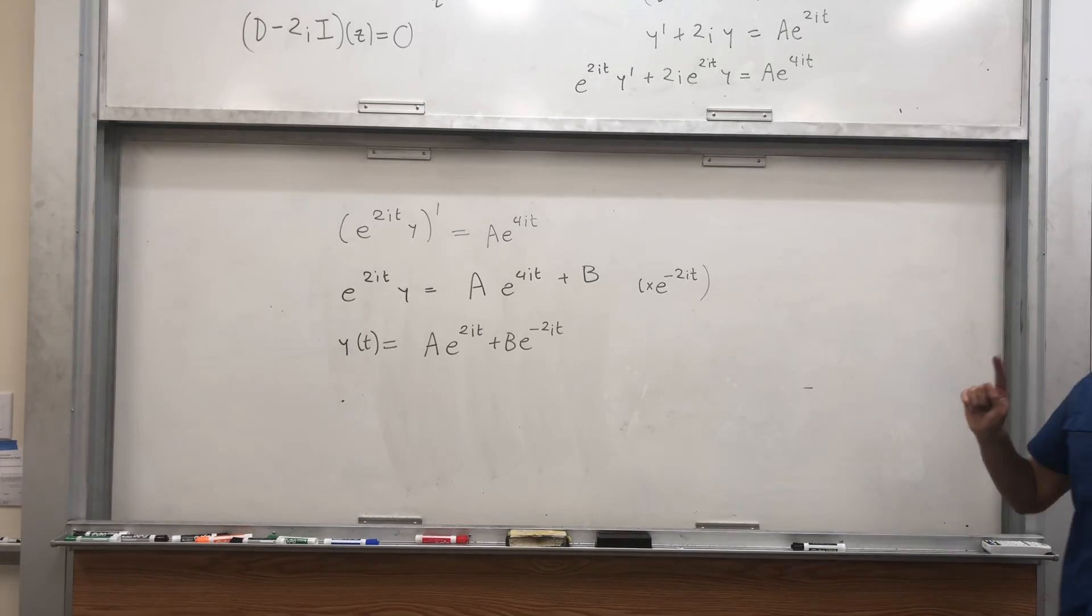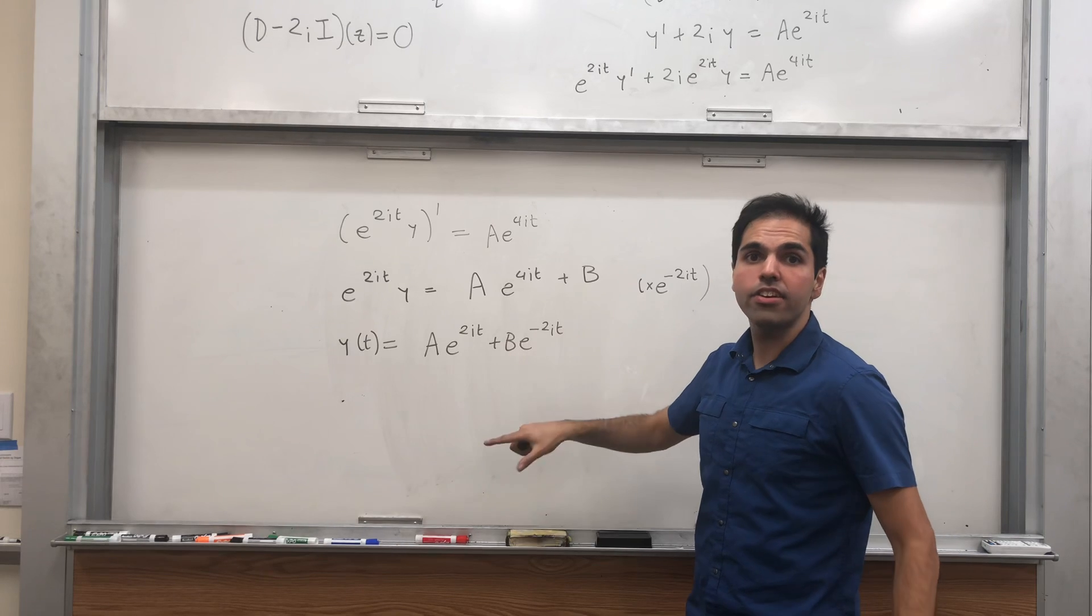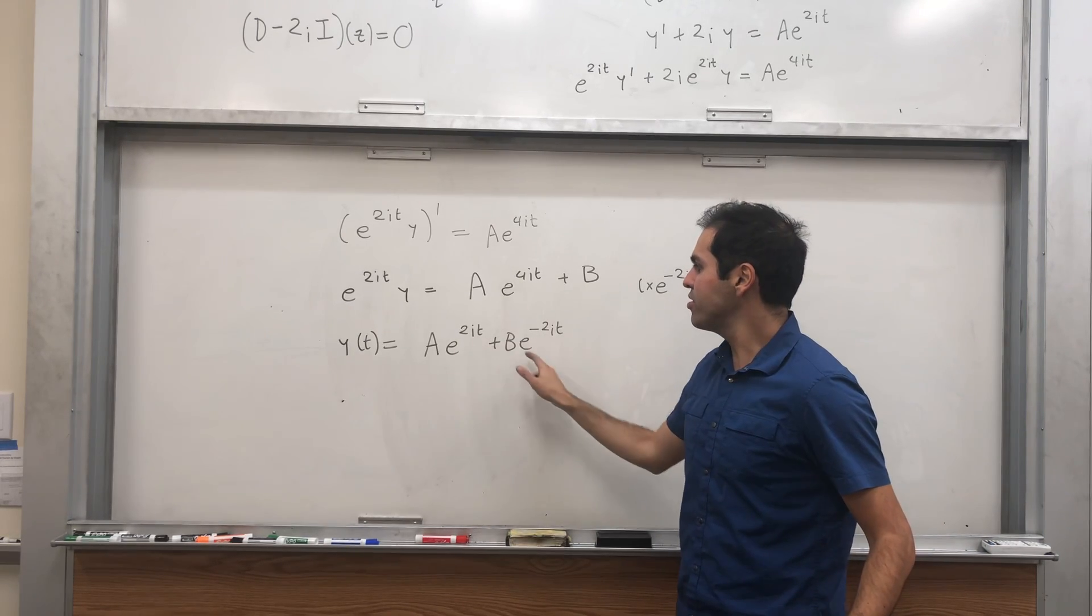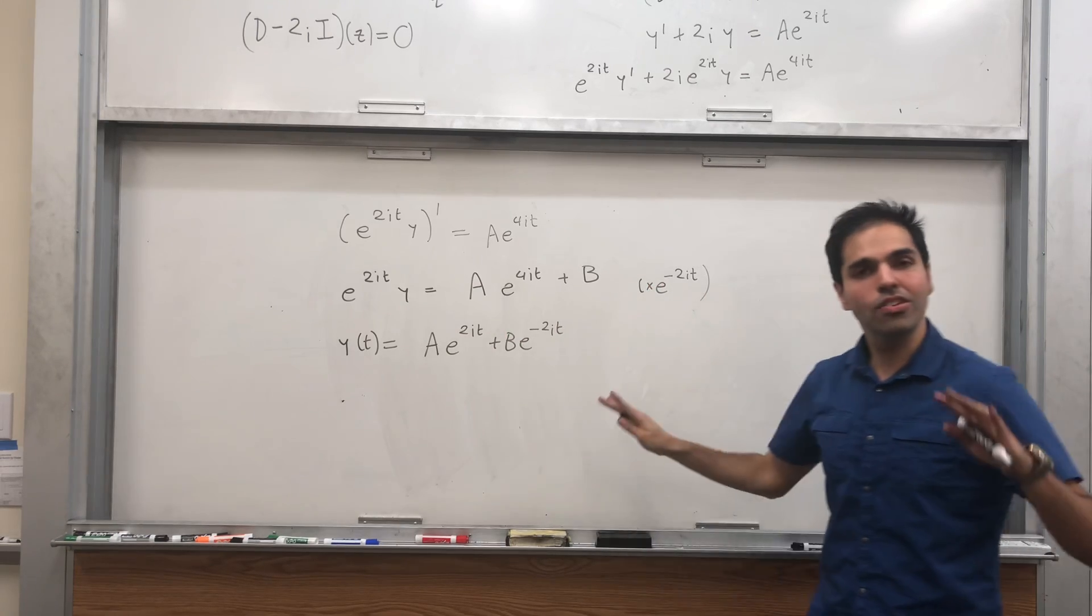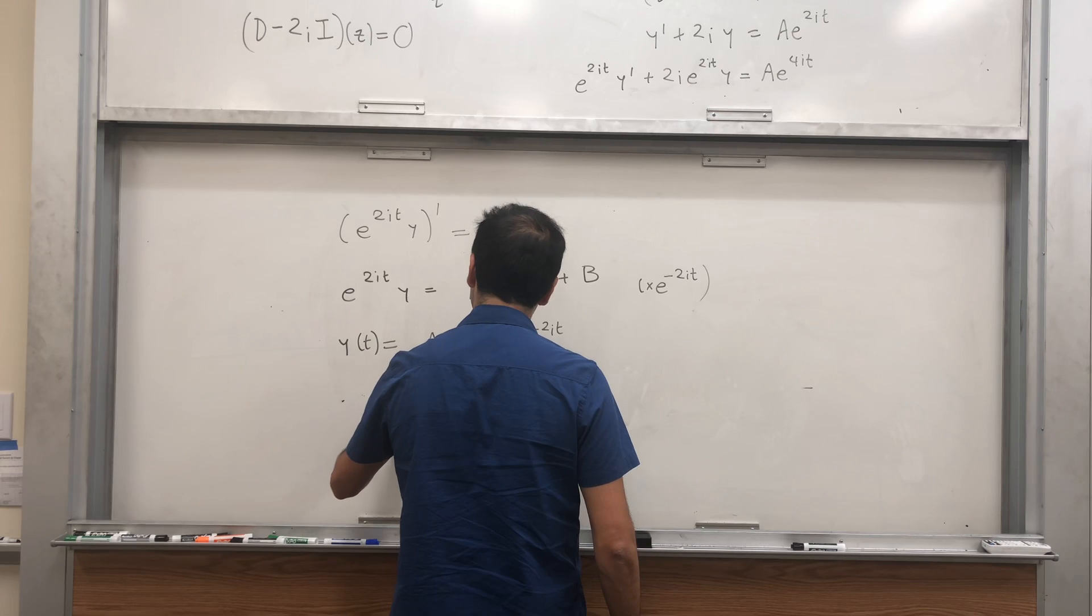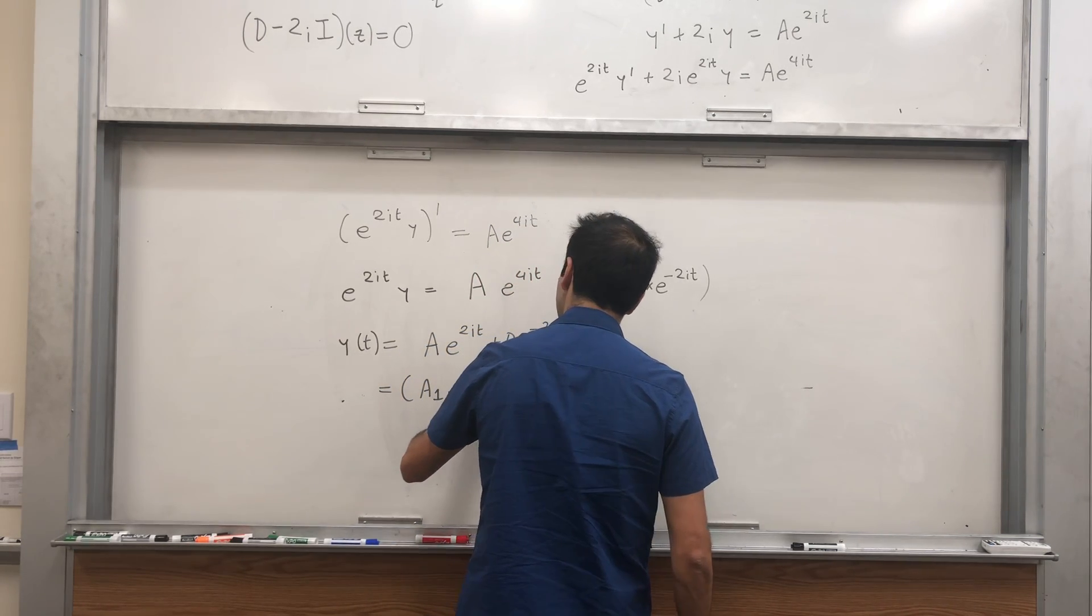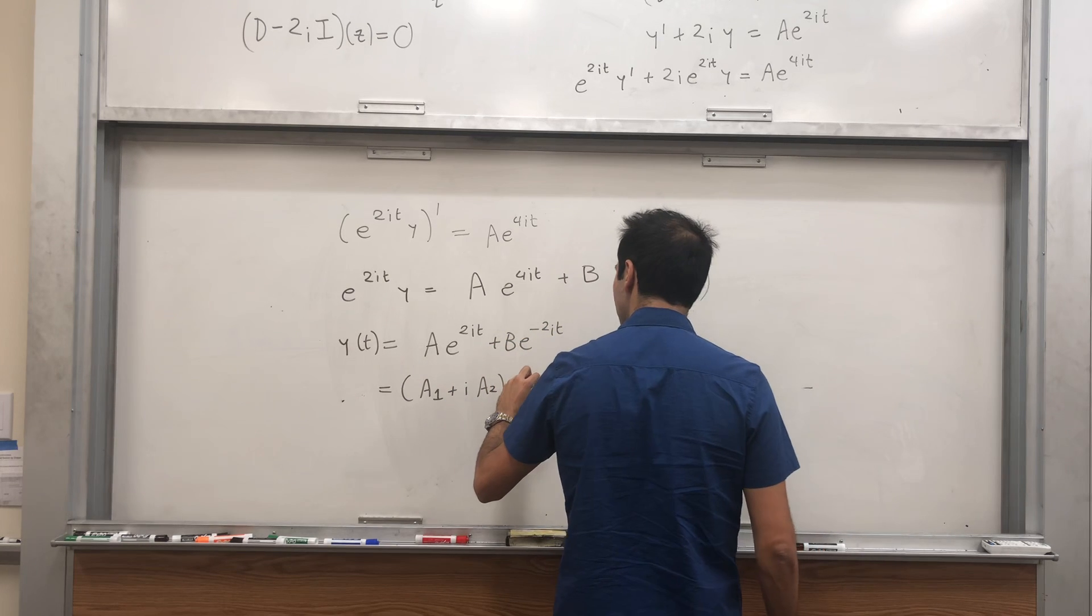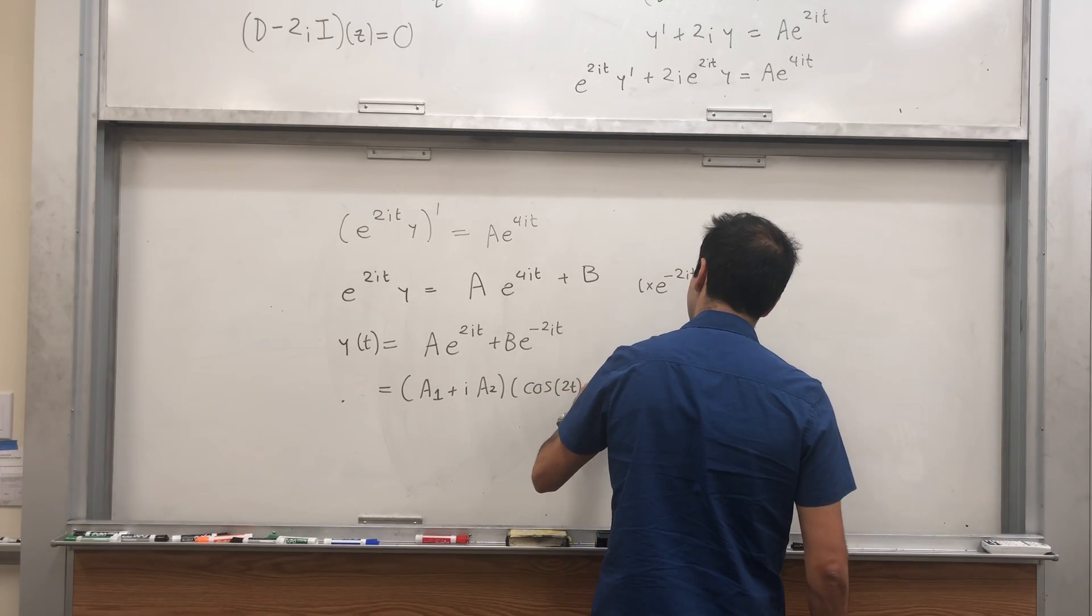This is good, except remember that A and B, they're complex numbers, and those are complex functions. But y is a real function. So let's see how to deal with that. Well, A is a complex number, so write this as a1 plus ia2, e to the 2it, that's cosine of 2t plus i sine of 2t.